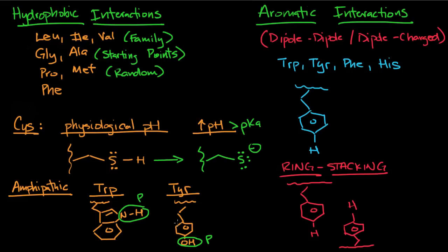The fourth and last type of interaction we're going to talk about is aromatic interactions. And aromatic interactions, the way I just think about them is they're dipole-dipole interactions or they're dipole-charged interactions. Because when you have that aromatic ring, that's going to generate some sort of dipole, and then it's going to interact with nearby charges or nearby dipoles.